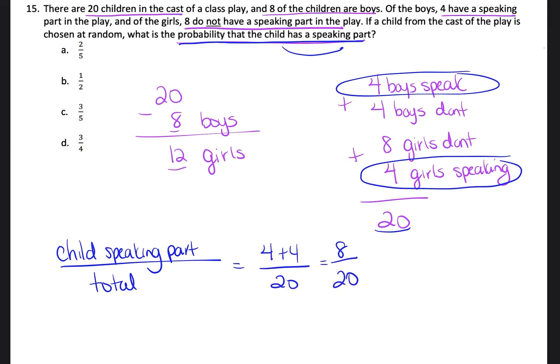When it comes to probability, we want to make sure that our fraction is always reduced. To reduce the fraction, we have to find the greatest common factor — the largest number that can go into both 8 and 20. The greatest common factor of 8 and 20 is 4. So we divide the numerator by 4 and the denominator by 4. 8 divided by 4 is 2.